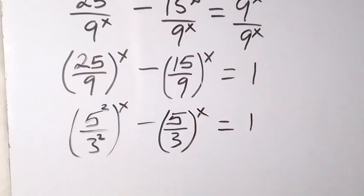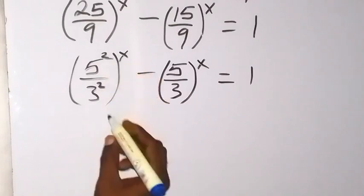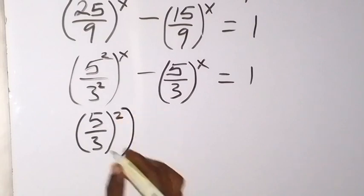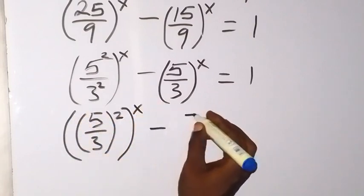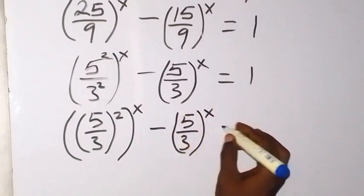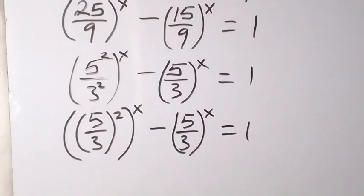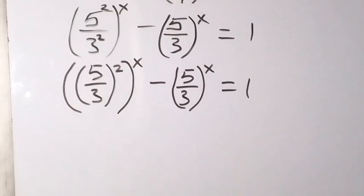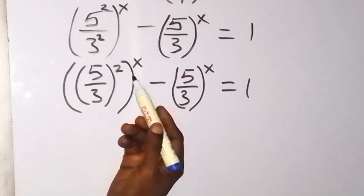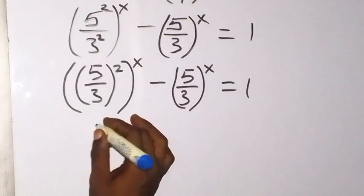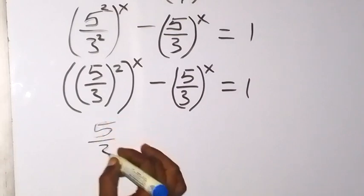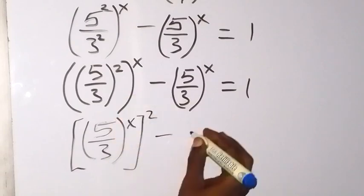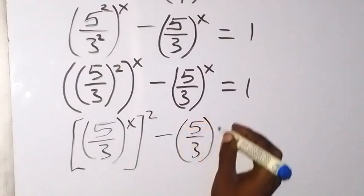That goes to 1. We can also see that here we have raised to power 2 and raised to power 2, so this one can be written as (5 over 3) raised to power 2, then all raised to power x, which goes to 1. We can interchange the x — x can come inside and 2 goes outside because the powers multiply. So we have (5 over 3) raised to power x, then all raised to power 2. This 2 has come out, then minus (5 over 3) raised to power x, and that equals 1.